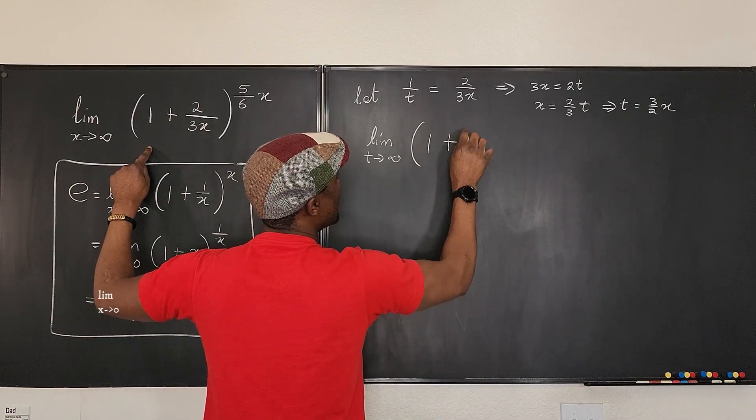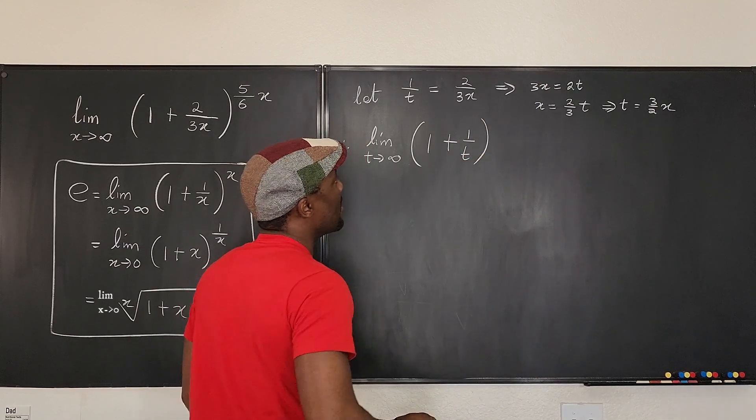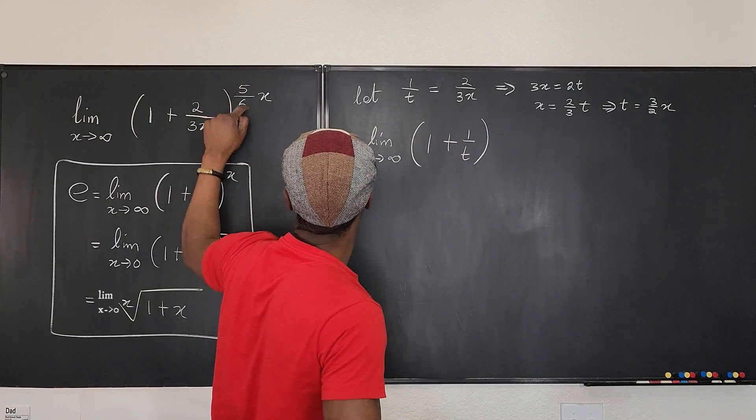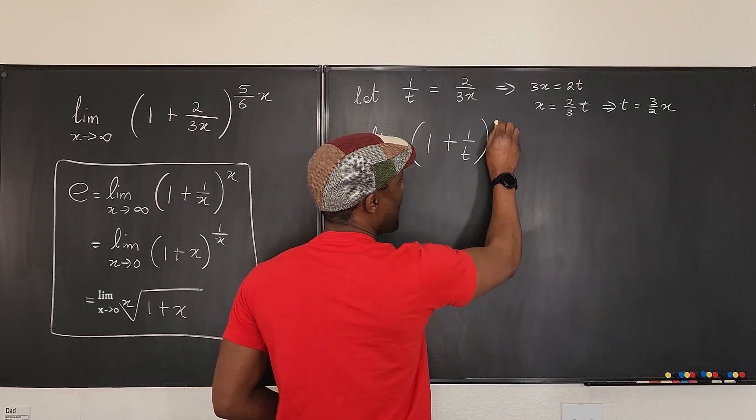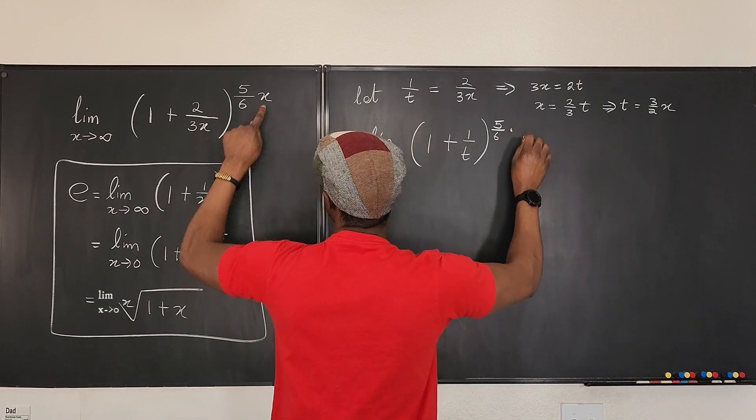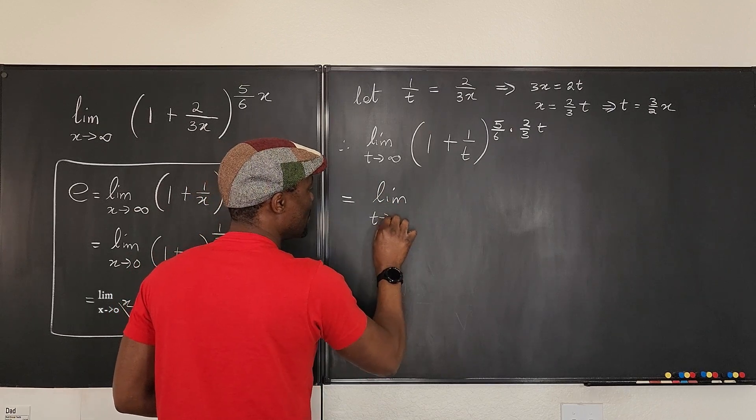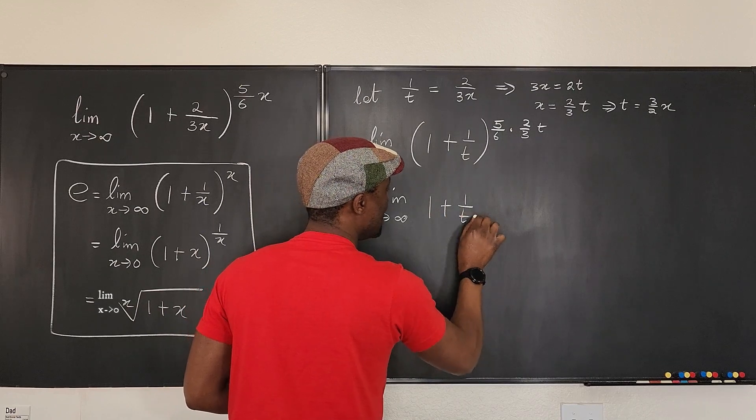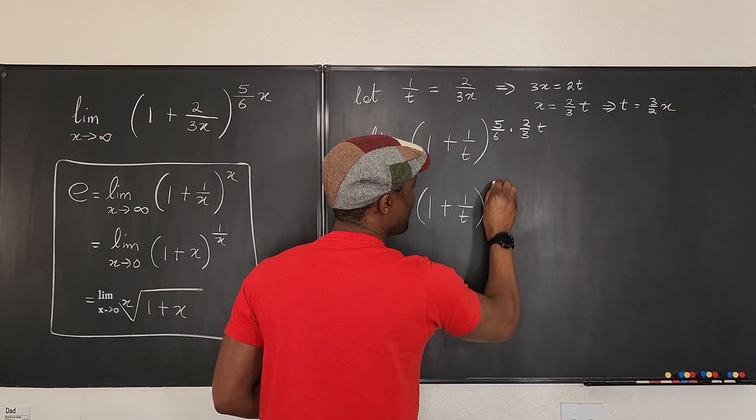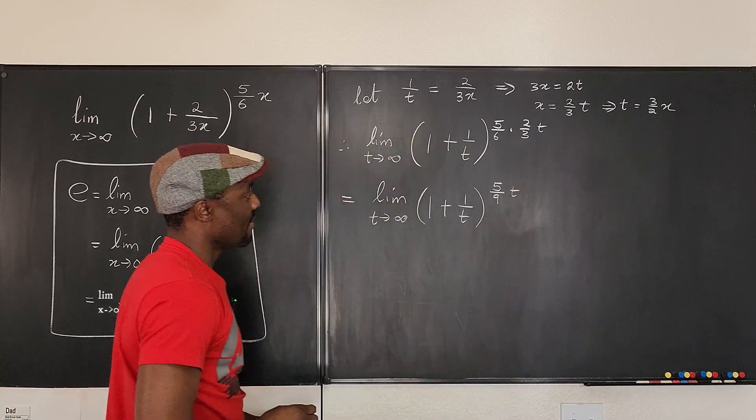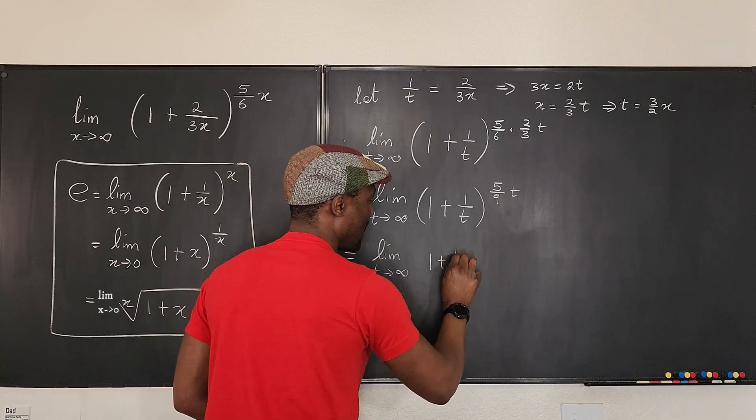And then we can say, this is 1 plus. Now, remember, we've replaced 2 over 3x with 1 over t. But now we have to write x, this 5 over 6x in terms of t. We said x is 2 over 3t. So this will be 5 over 6. Instead of writing x, we're going to write 2 over 3t. And now see what this is. This is now the limit as t goes to infinity of 1 plus 1 over t raised to, what do we get here? How do we simplify? 2 cancels out 2 here. So you have 5 over 9. We're going to have 5 over 9t.